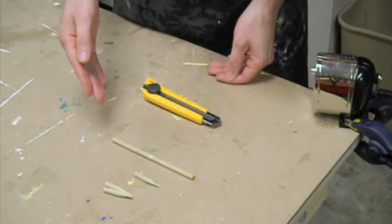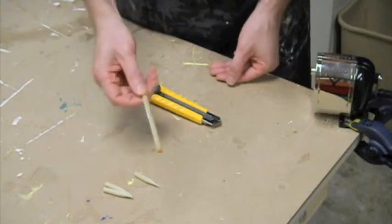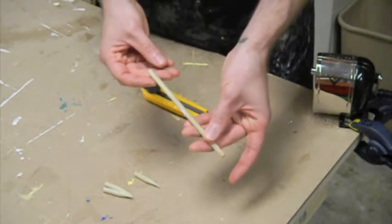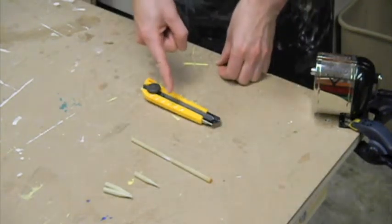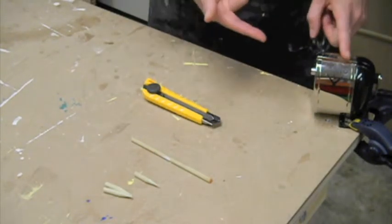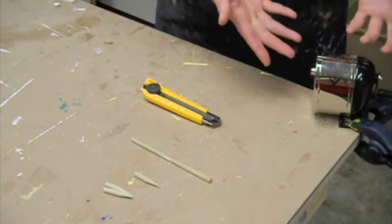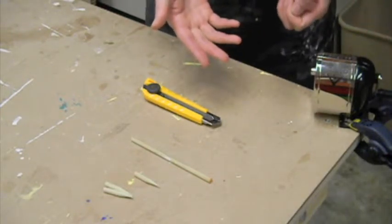What you need to make dowel nails is really simple. You need doweling, and this is a quarter-inch doweling that we're using today, a sharp utility knife, and a pencil sharpener. Here at the Adaptive Design Studio, we're using a school-style pencil sharpener.